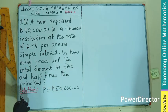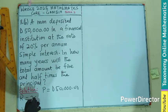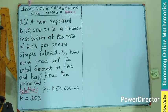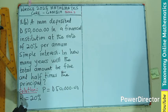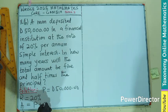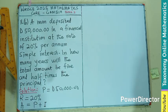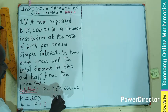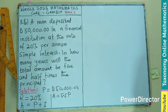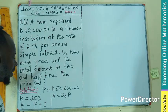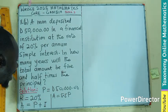We also know the rate, which is 20 percent. Now, we know that Amount equals Principal plus Interest. But we are told the amount we are looking for is five and a half times the principal — that is 5.5 times the principal.